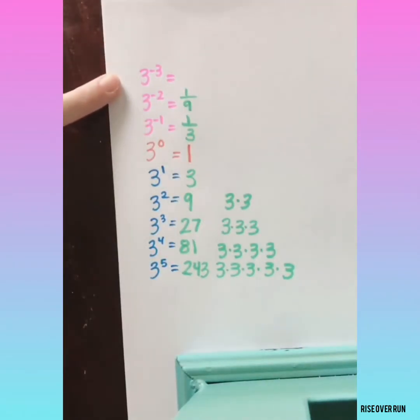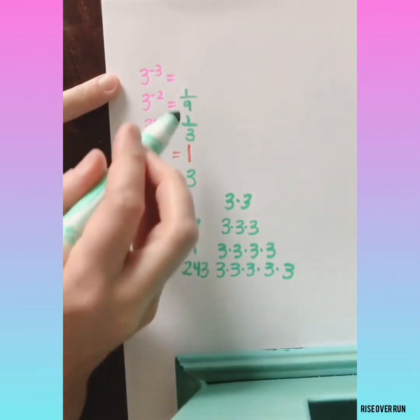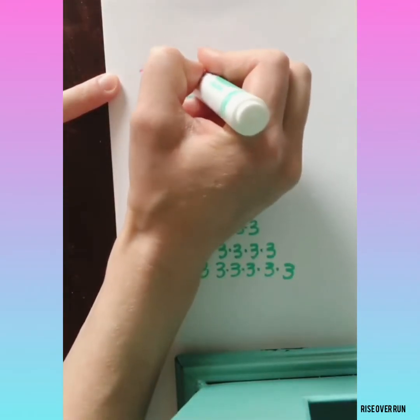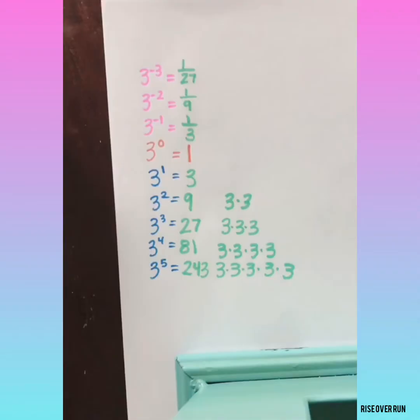3 to the negative 3rd power, continuing the pattern, divide by 3 to get 1 over 27.